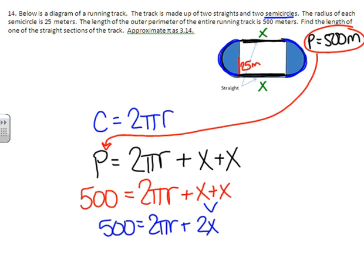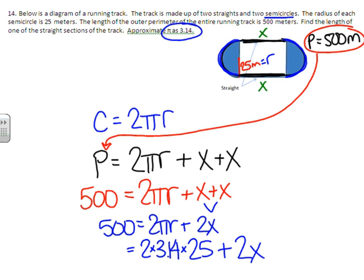X plus X is 2X. So now I have 500 equals 2 pi r plus 2X. I also know the value for pi and I also know the radius. So we're going to substitute those values in. So 2 times 3.14 times 25. That's my 2 pi r plus 2 times X. All together has to equal 500. Now I know that equation is getting a little bit big, but we can handle it.